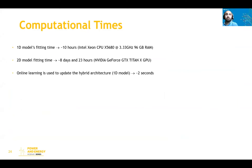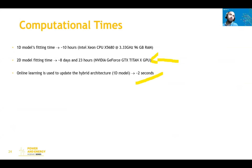Regarding computational times: the 1D forecasting fitting took around 10 hours using CPU only. The 2D forecasting model took around 8 days and 23 hours to train, using a GPU. To operationalize the model without repeating these training times daily, we applied online learning: we train the models initially, freeze the layers, and then do a daily update using the preceding day's data. This makes the computation much faster in an operational fashion.